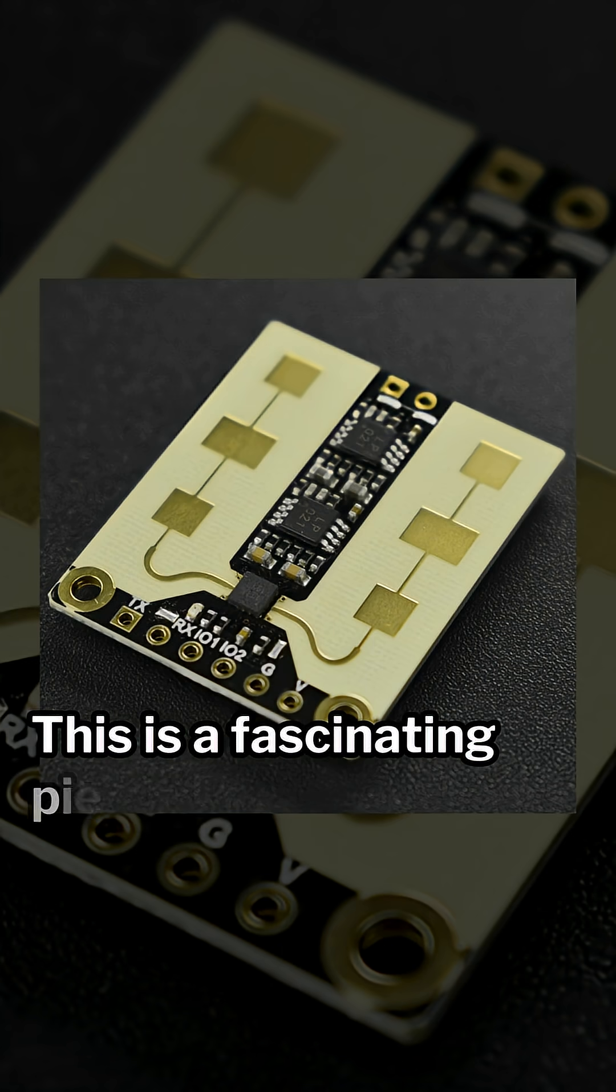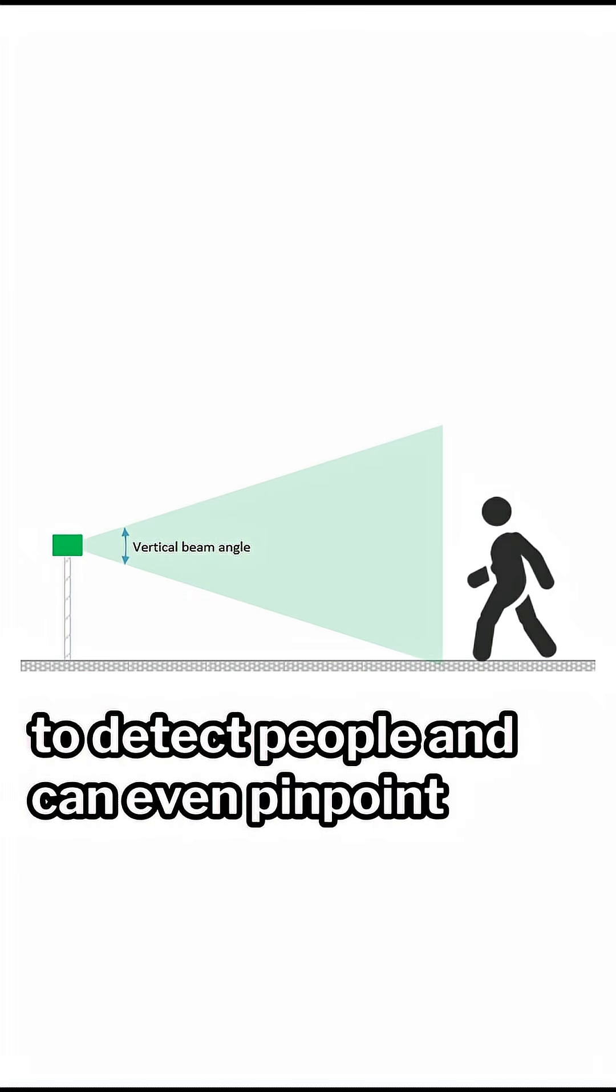Number three: human sensor. This is a fascinating piece of technology that uses radar to detect people and can even pinpoint where they are.